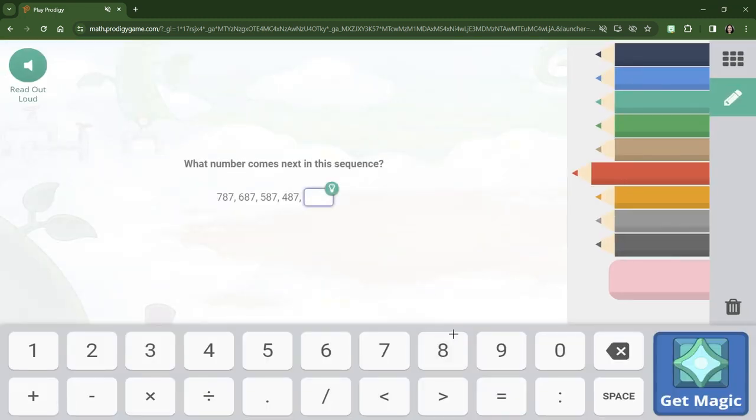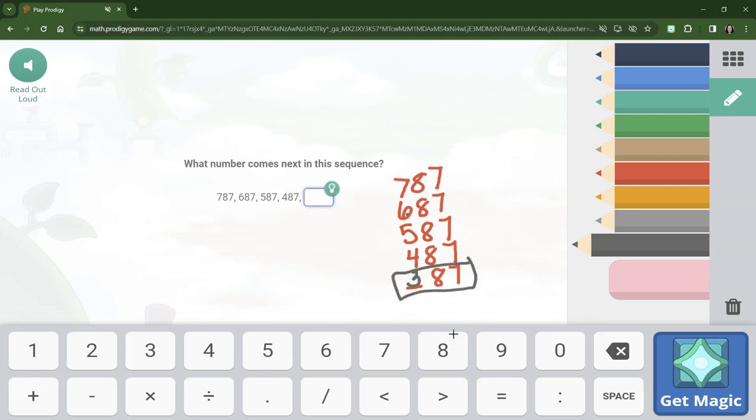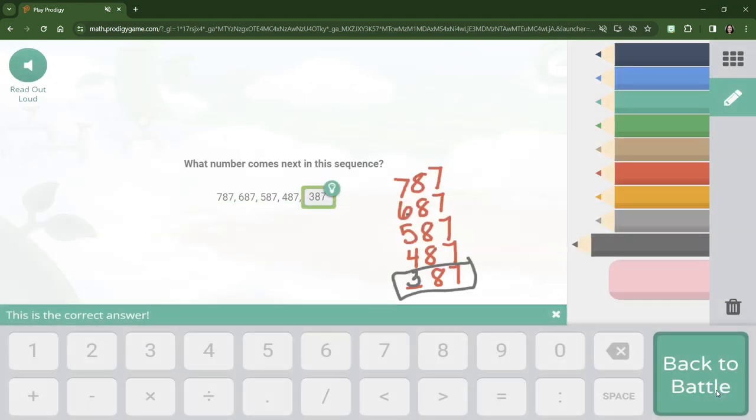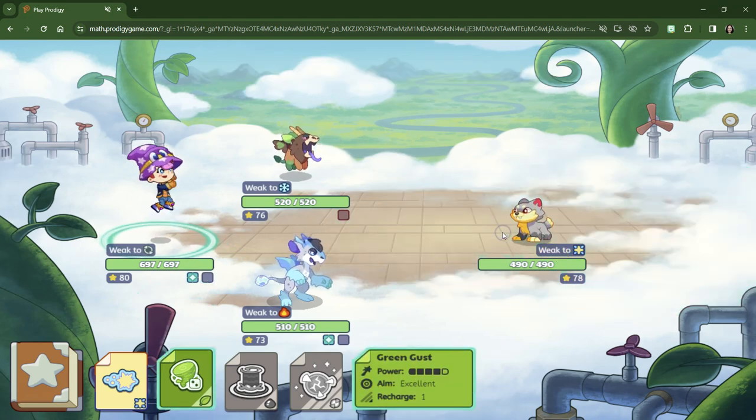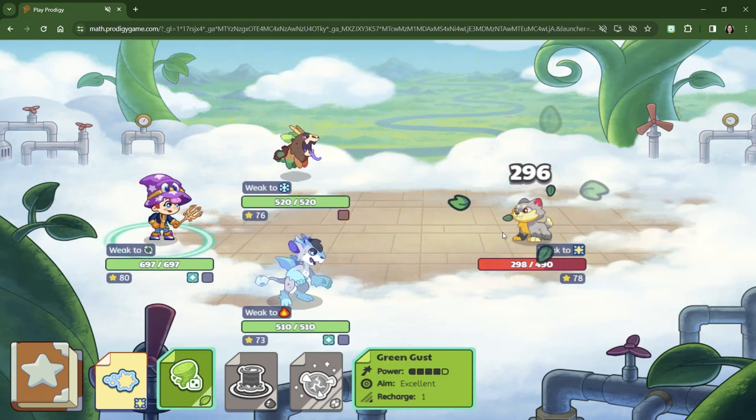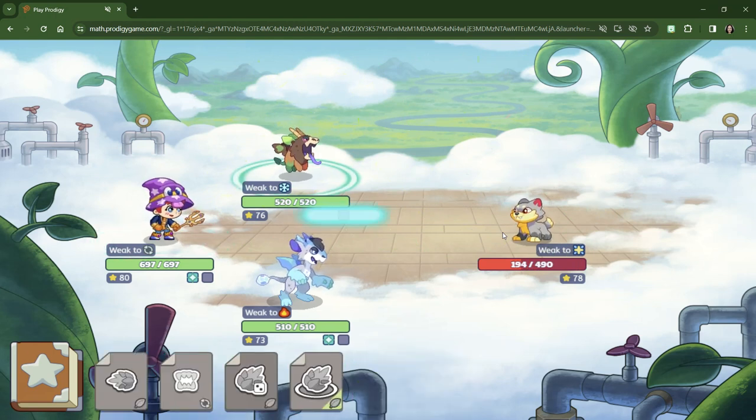What number comes next in the sequence? 787, 687, 587, 487. What hundreds is going to go there? 700, 600, 500, 400. You got it. 387. And I like to write my numbers one on top of each other because it's easier for comparing. Because that way we line up all of the place values all at one time. Green gust. Powerful. We'll take it.